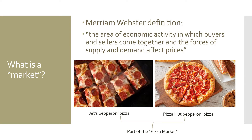For example, if there are more people wanting pizza, that is going to drive up the price. If there are lots and lots of suppliers competing with each other, that will actually lower the price. This is microeconomics — the idea of supply and demand setting a price. That's what political scientists mean when they talk about a market.